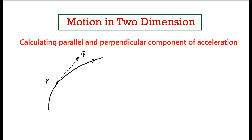Now this object will have some acceleration — let's say acceleration is in this direction, so this is the total acceleration of this object. We can think of one axis along the velocity and another axis perpendicular to it. I can decompose this acceleration vector: one component along the velocity and another perpendicular to the velocity. So we have basically decomposed acceleration into two components: the parallel component and the perpendicular component.